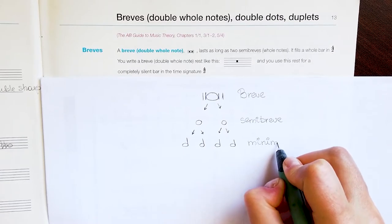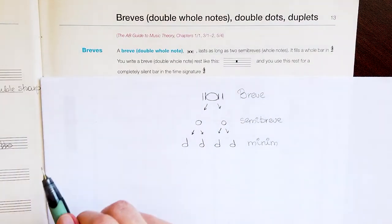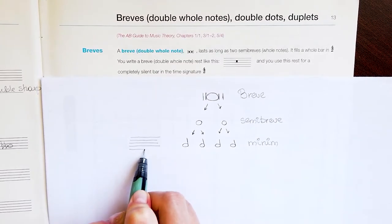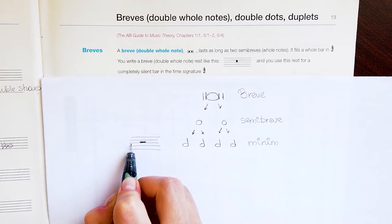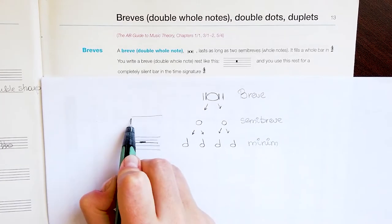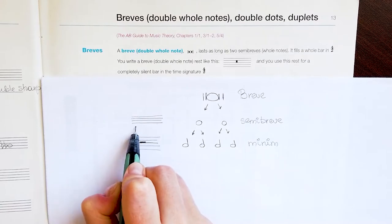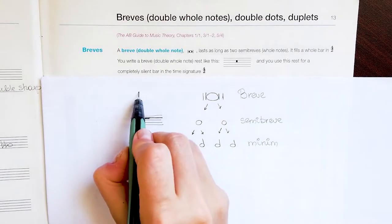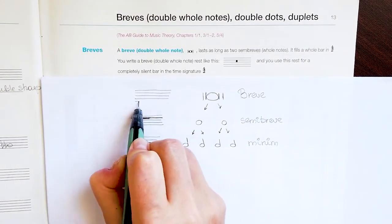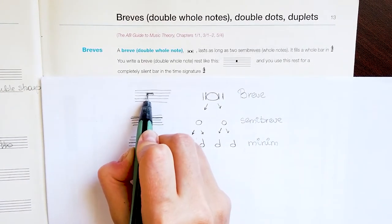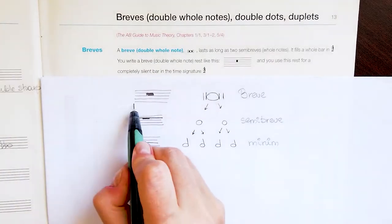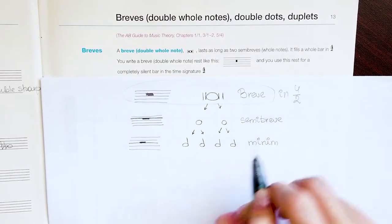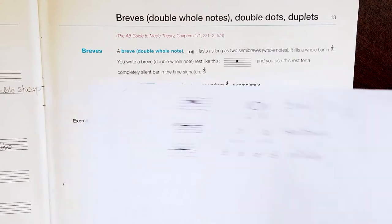Now about rests: the minim rest is written over the third line, the semibreve rest is written under line number four, and the breve rest fills up all the space between line number three and four. The breve note is used in 4/2 time only.